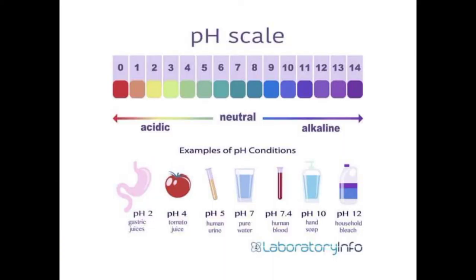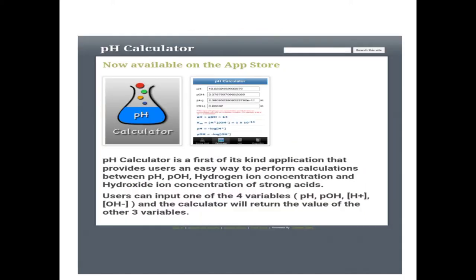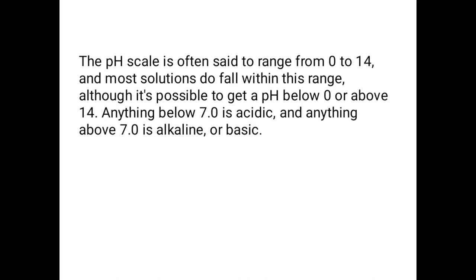Now this is a pH scale in our daily life. This is a pH calculator — if you don't know about weak acid, strong base, or strong acid, you may download this app to understand properly about weak acid and weak base. The pH scale is often used to range from 0 to 14. Most solutions fall within this range, where below 7.0 is acidic and anything above 7.0 is alkaline or basic.